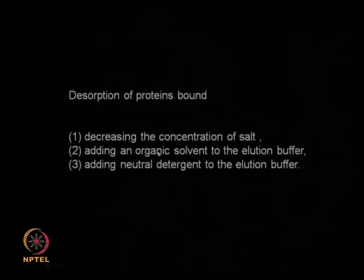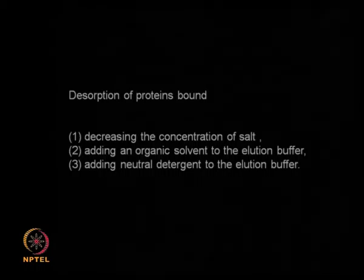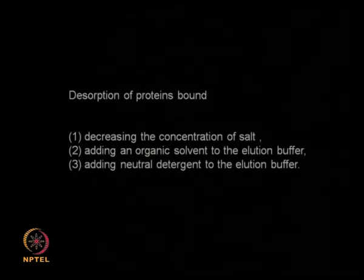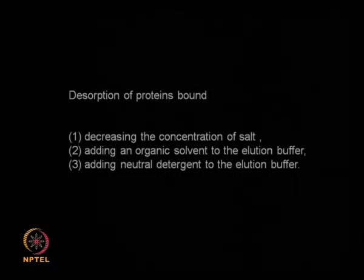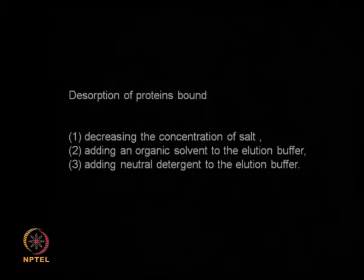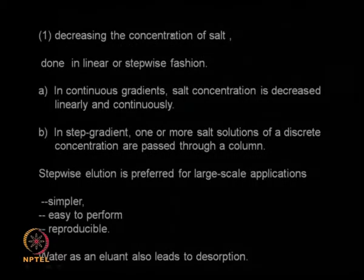Important parameters to consider in HIC include: the type of ligand, the percentage coverage of ligands on the matrix, composition of the matrix support, type of salt used in the buffer, concentration of the salt, pH, temperature, and what additives are used in the buffer — such as chemicals to change surface properties or the dielectric constant of the solvent. These parameters affect the performance and selectivity of HIC.